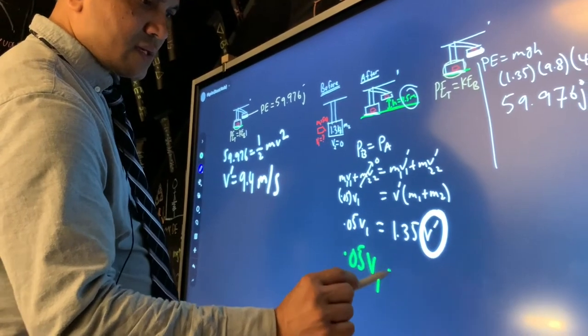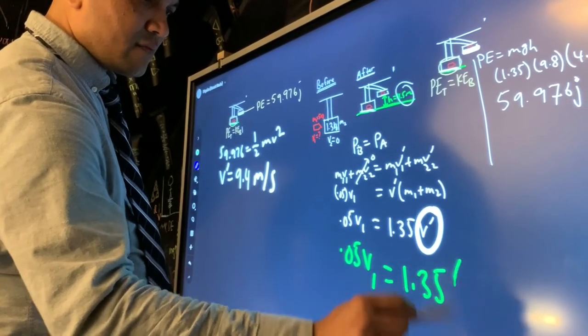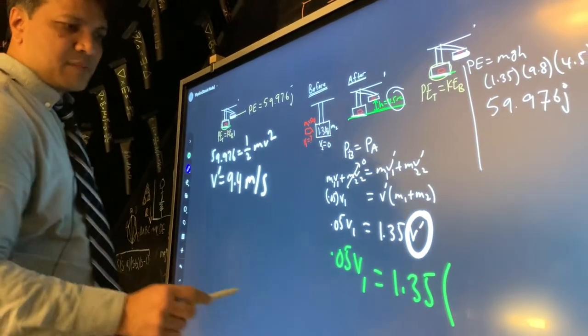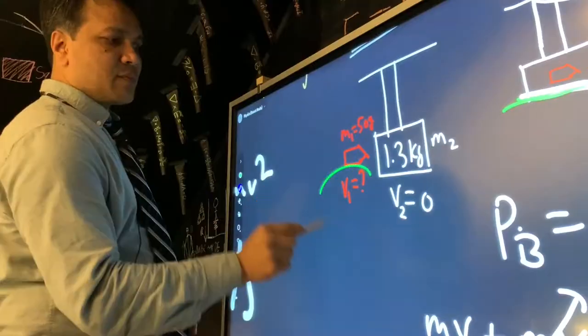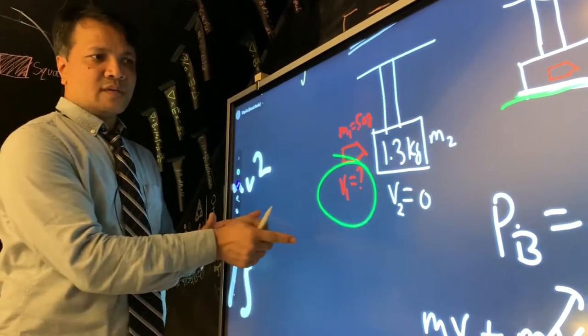v1 is equal to 1.35. You get the final velocity of 9.4 for the bullet. Once you find the velocity of the bullet, then you're going to use the conservation of momentum to see whether momentum is conserved.